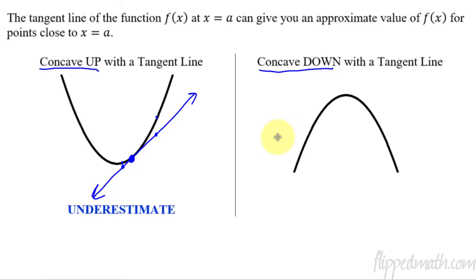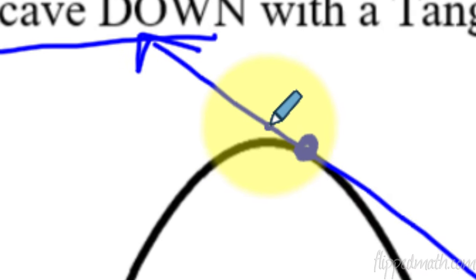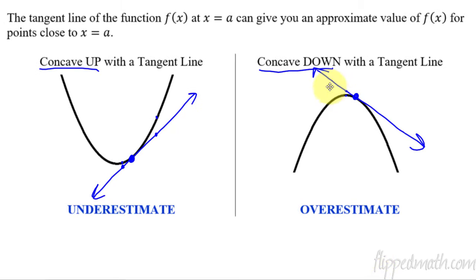Now concave down — do exactly the same thing. Pick a point, draw a tangent line. If you choose any point near x equals a, that gives an approximation of the nearby function value. In this case, it is an overestimate — every single point on this line is above the function, except for the tangent point itself. The further away we get from that point, the worse the approximation, so you want to stay close to that dot.